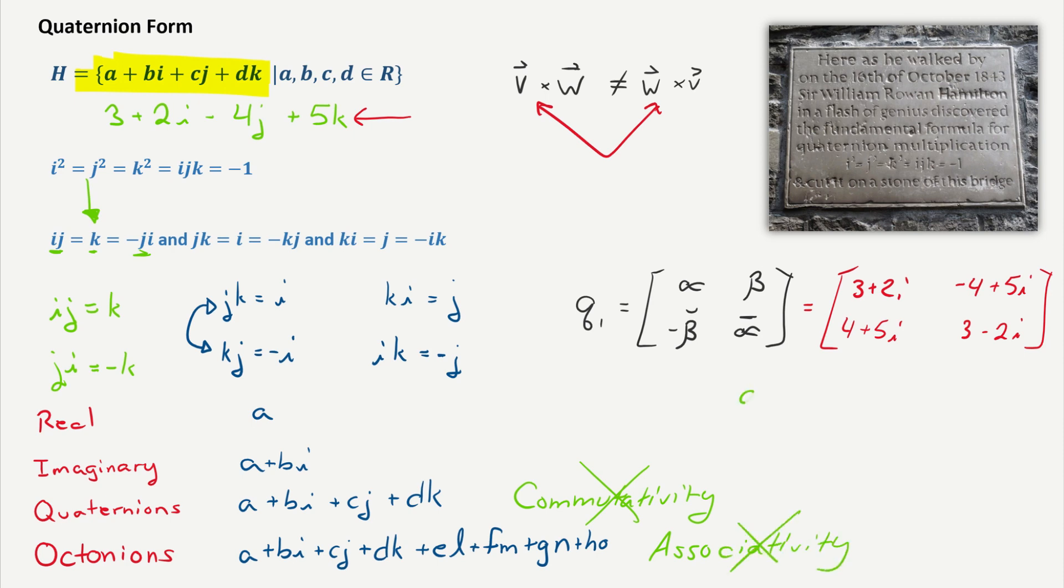Associativity, if you remember, is the idea that a times b times c is the same as a times b times c. It doesn't matter which two I multiply first, it's going to be the same. Well guess what? With octonions, that does not exist. So I like to think of it as you go higher and higher in these dimensions, it's breaking apart. The rules of algebra are falling apart.